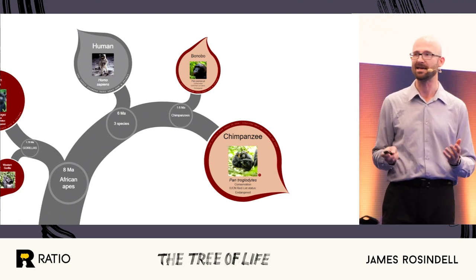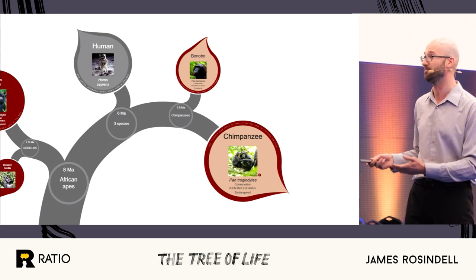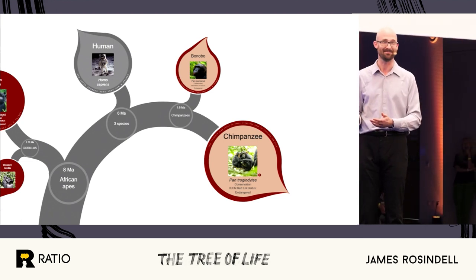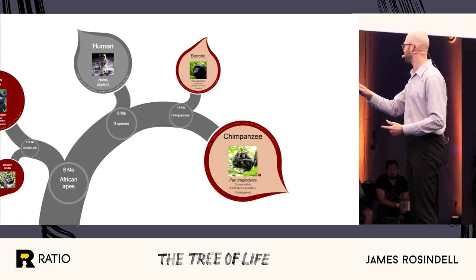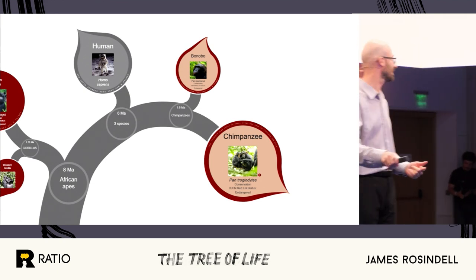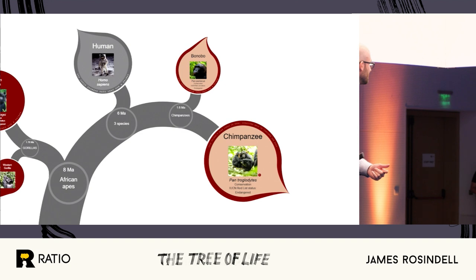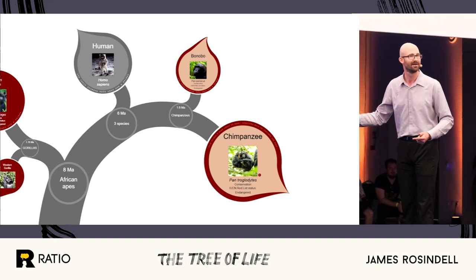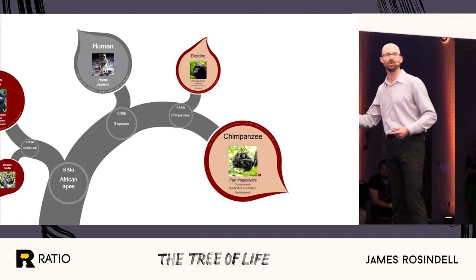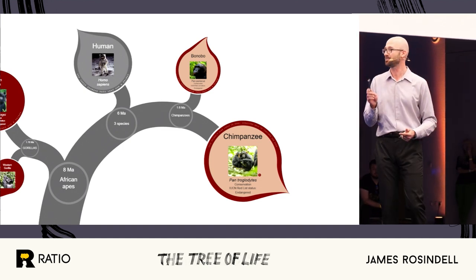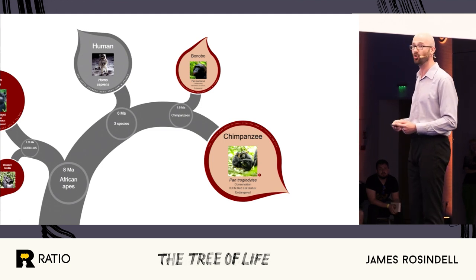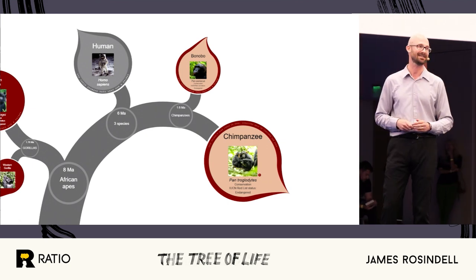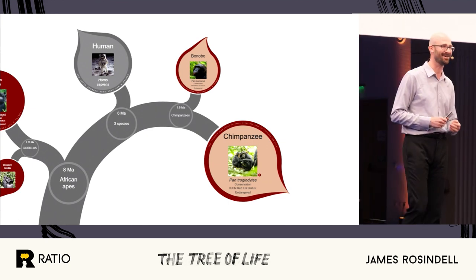I'm going to ask you to vote on which one we're closer to. To make it fun: the chimpanzee, when they get into arguments, solves that by having fights. The bonobos, when they get into arguments, solve that with sexual activity. Quick show of hands — who thinks the chimpanzee has more genetic material in common with us? And who thinks the bonobo? The difference is only 0.1%, which is a pretty small difference. But the winner is actually the chimpanzee — we're slightly closer to them.